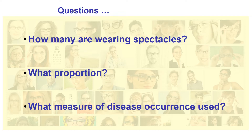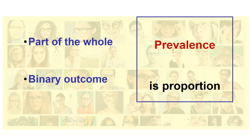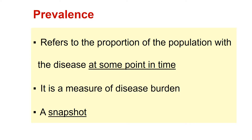And what measure of disease occurrence can be called for that proportion? We were looking at prevalence, which is a proportion that is part of the whole, so it can range from 0 to 1. It is a binary outcome — whether you are wearing spectacles or not. The proportion here was 100%, but in real life for any particular health condition, the proportion can vary from 0 to 1. Prevalence refers to the proportion of the population with the disease at some point in time. It is a measure of disease burden. It is a snapshot — remember I took that snapshot from Google.